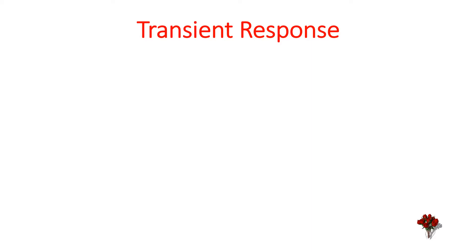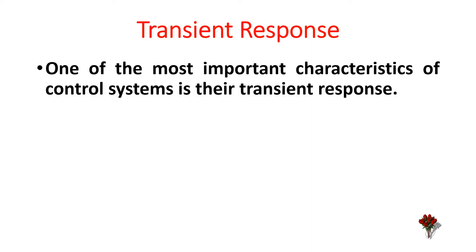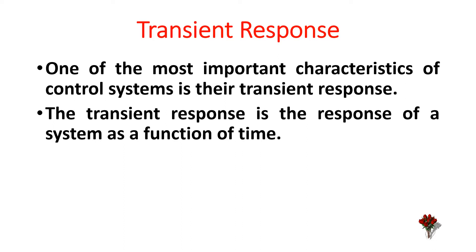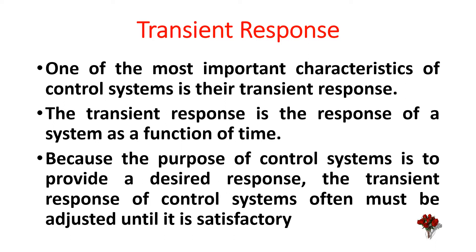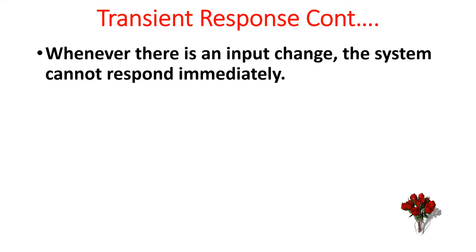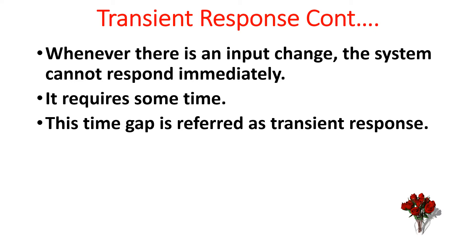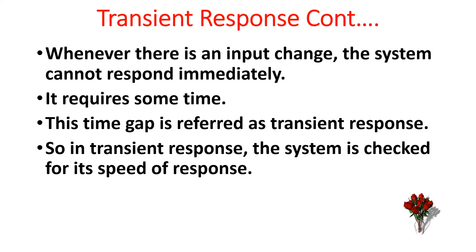Now we discuss about the transient response. One of the most important characteristics of control systems is their transient response. The transient response is the response of a system as a function of time. Because the purpose of control systems is to provide a desired response, the transient response of control systems often must be adjusted until it is satisfactory. Whenever there is an input change, the system cannot respond immediately — it requires some time. This time gap is referred to as transient response, and in transient response the system is checked for its speed of response.